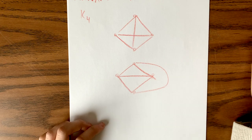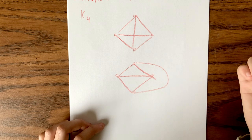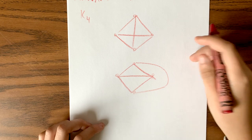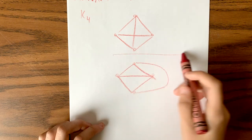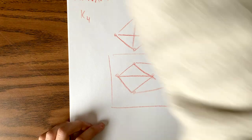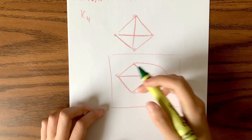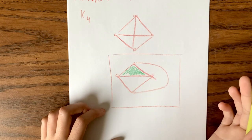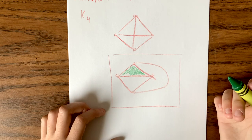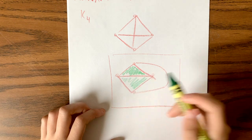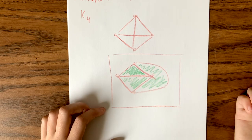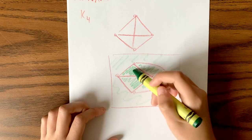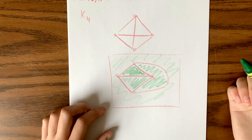A face of a planar drawing of a graph is a region bounded by its edges and vertices that doesn't contain any other vertices or edges. On this planar drawing of K4, we can identify the faces: there's one inner triangular region, another inner region, a third region, and the outer unbounded region — giving us four faces total.